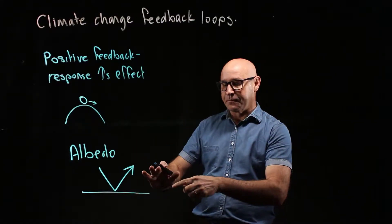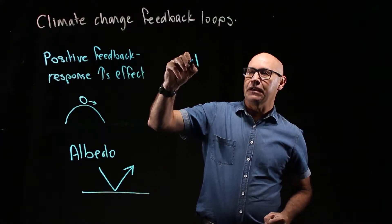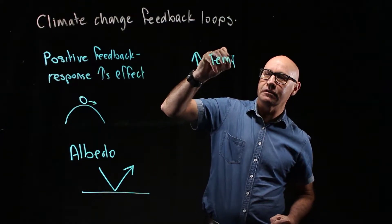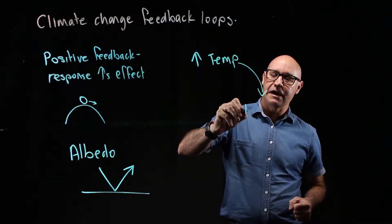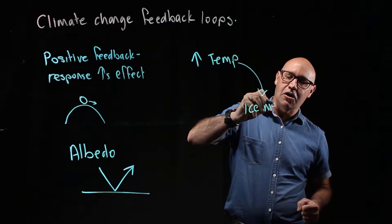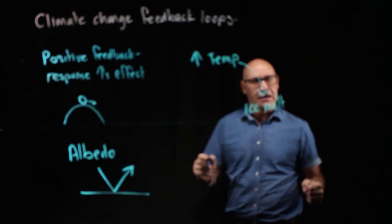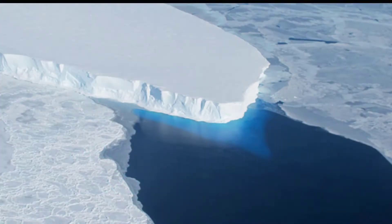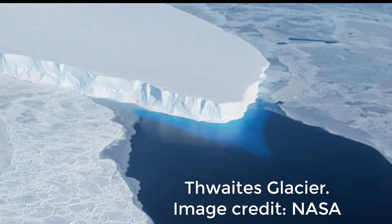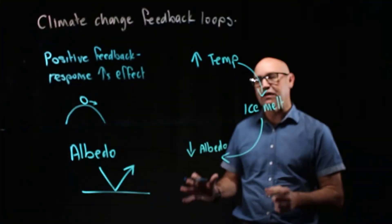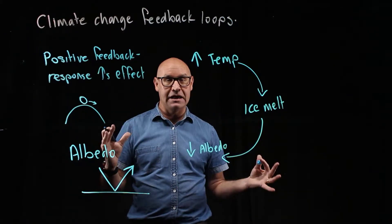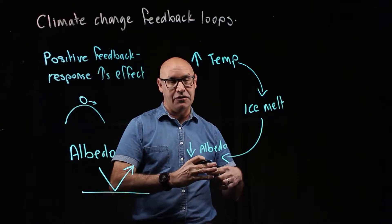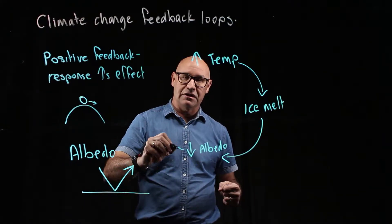The positive feedback loop works as follows: increased global temperatures cause that ice to melt, resulting in the melting of the polar ice caps. The effect of that is a reduced albedo effect — a reduction in the amount of radiant heat reflected away from the earth. So more heat is absorbed by the earth and temperatures increase.